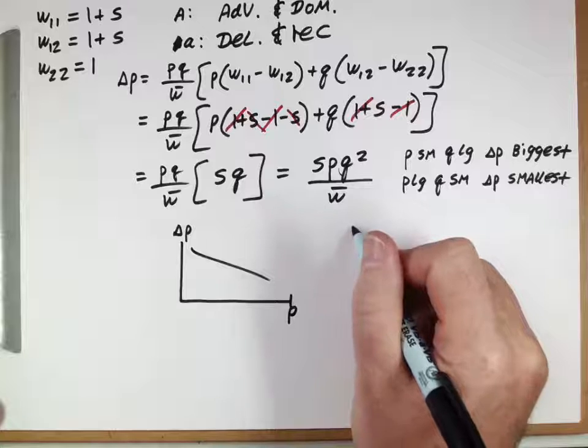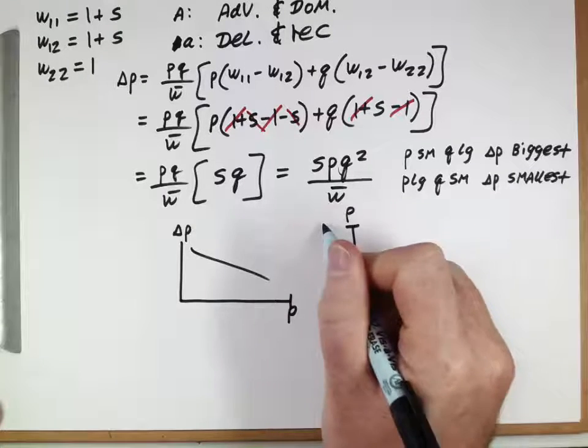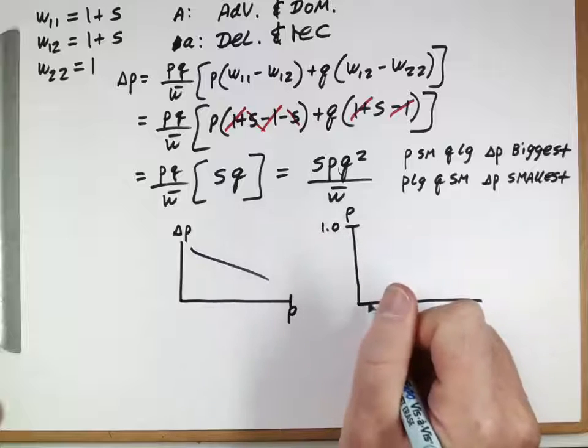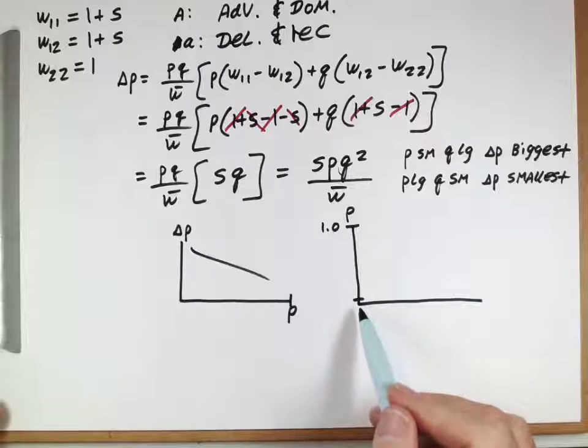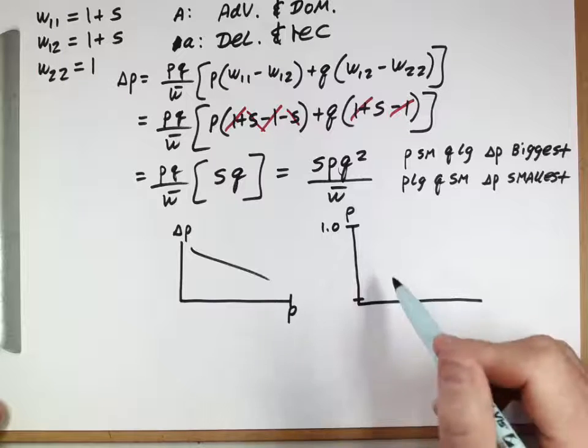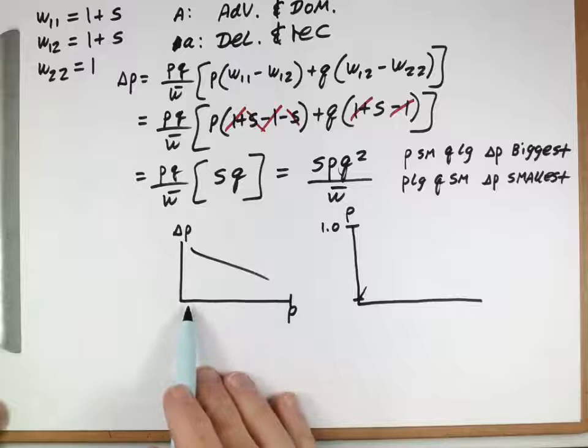And what that means is if we're going to plot the value of P over time, similar to what we did last time when we think about a brand new kind of allele or a very low frequency of the capital A allele, it'll increase at the beginning quickly, right? Because when P is the smallest, delta P is the largest.